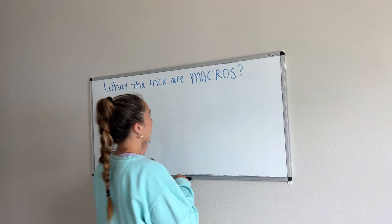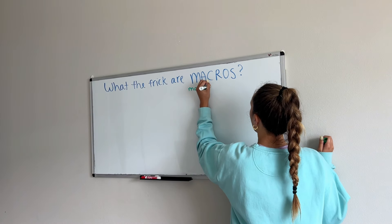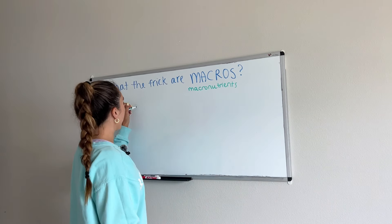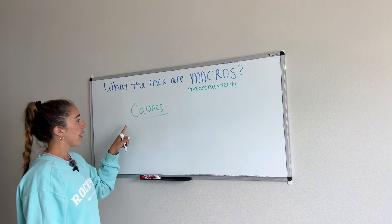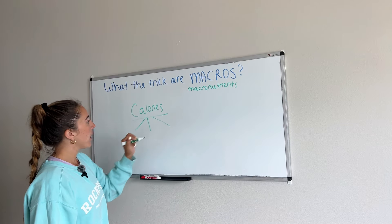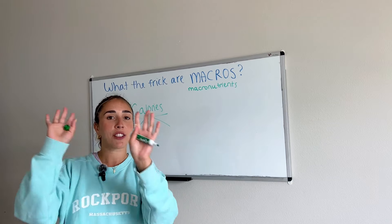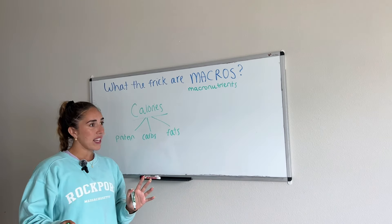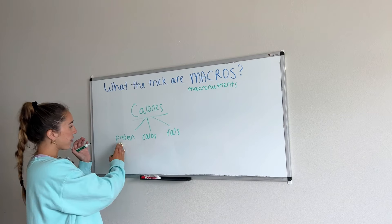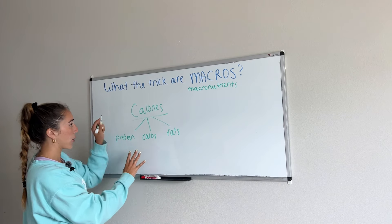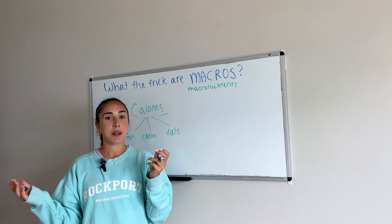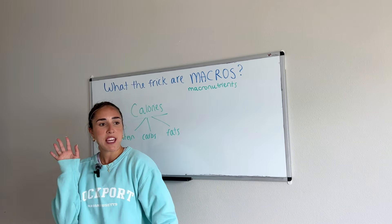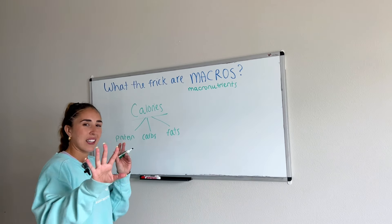To start off, macros actually stands for macronutrients. Macronutrients is a subunit of the calories that we eat per day. So calories are the big guy here, and underneath calories they're made up of three different sections: our proteins, our carbohydrates, and our fats. Now our bodies — every body is different, by the way — need different amounts of these three categories to make up our calories to run properly. Think about a car with gasoline: the gasoline is the calories, and then the type of gasoline, like premium, is like the macros — the portions that you're eating.